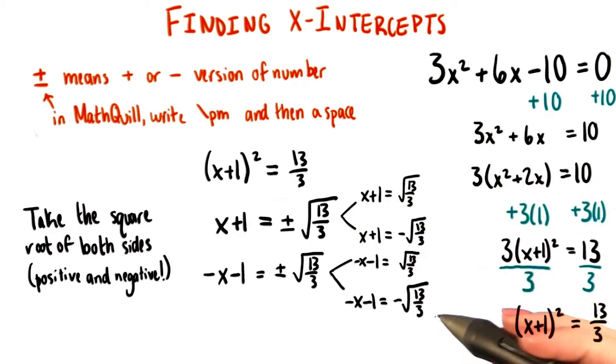However, we need to notice something special about these equations. If we take this equation, negative x minus 1 equals negative root 13 over 3, and we divide both sides by negative 1, we end up with x plus 1 equals the root of 13 over 3.